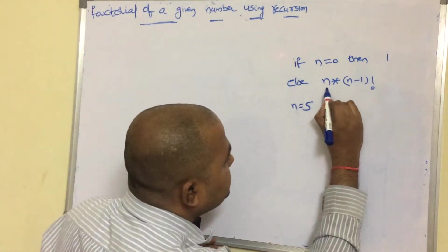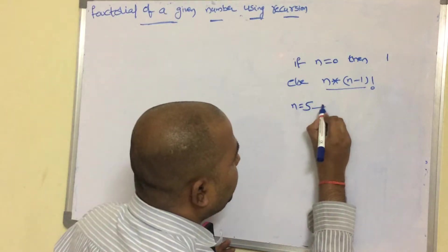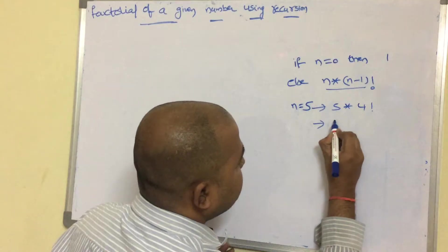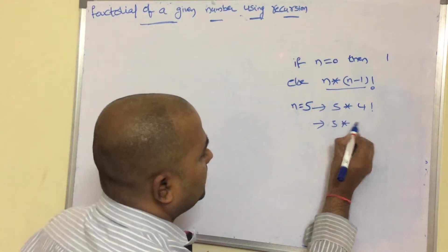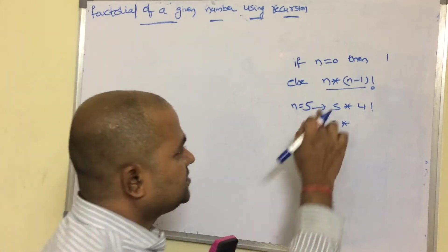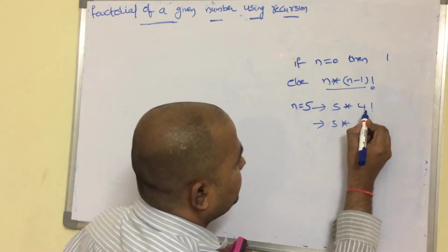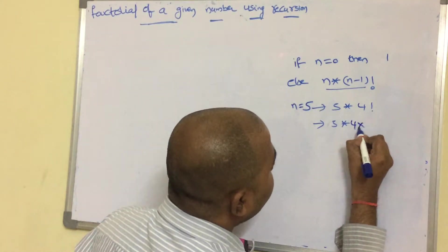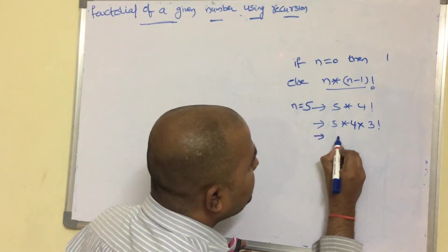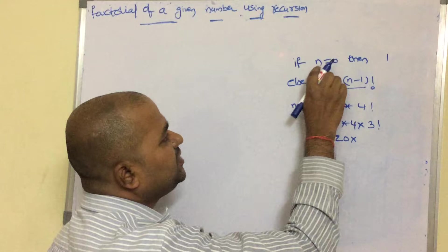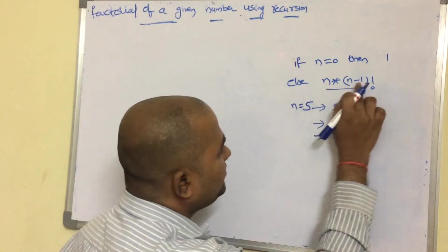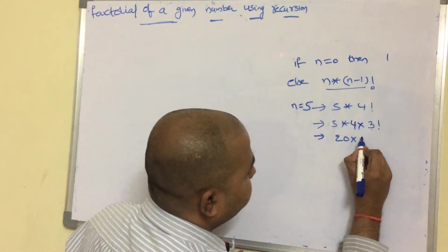Let us assume n value is 5. Since 5 is not equal to 0, the condition is false, so we execute: 5 into 4 factorial. Now n value is 4; 4 is equal to 0 is false, so this block will be executed: 4 into 3 factorial.